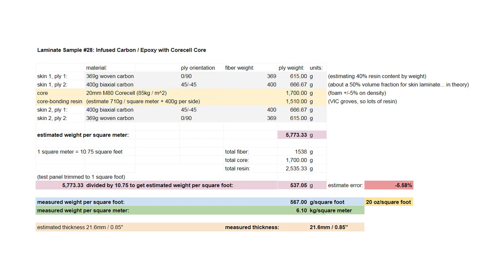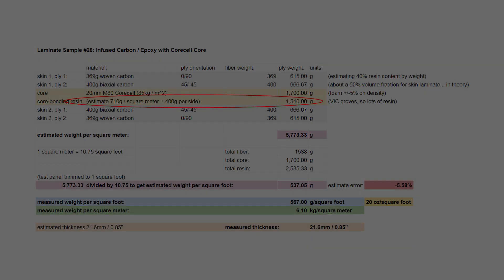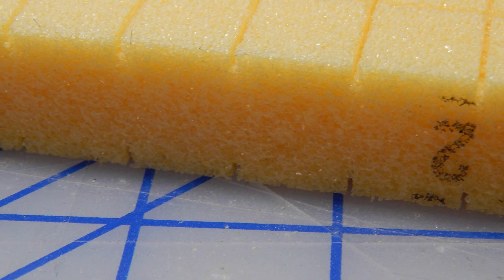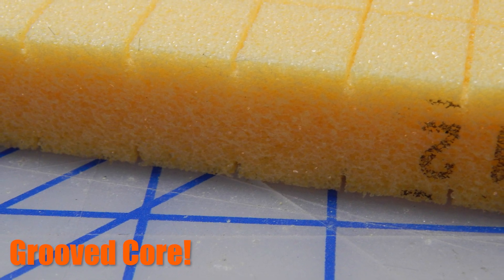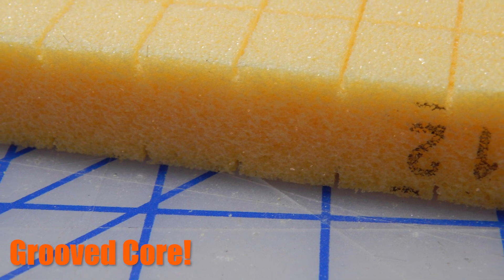Having a look at the laminate schedule, you can see an estimate of the resin uptake for the grooved core, and this grooved core acts as the flow media here. So the resin flows through the grooves and then up and wets out the skin.